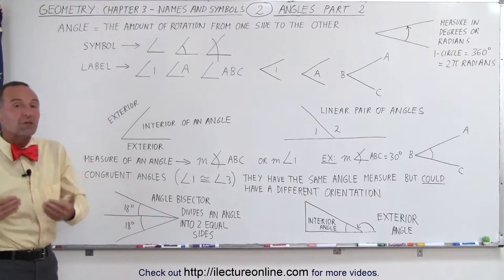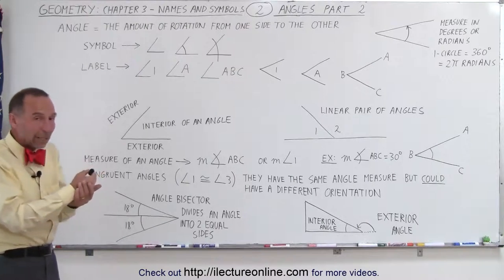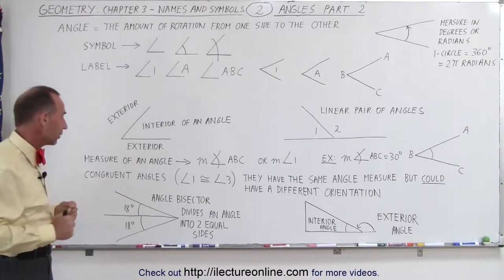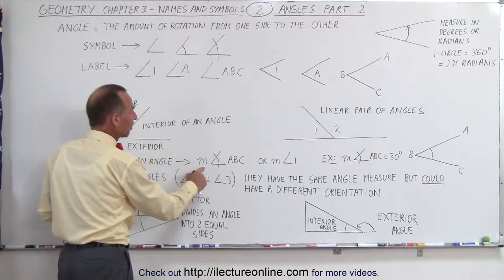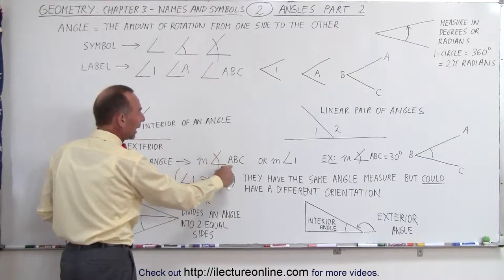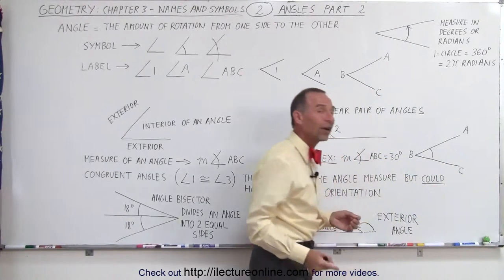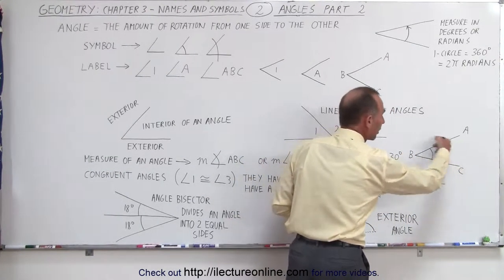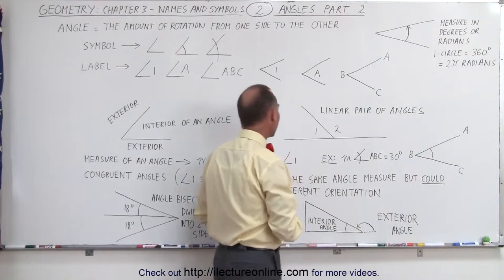We need to be able to measure angles and have a symbol to indicate that we've measured the size of the angle. So the measure of an angle can be expressed like this. We put a small m in front, then we have the angle symbol and then the indication which angle we're talking about. So we can have it as the measure of angle ABC.